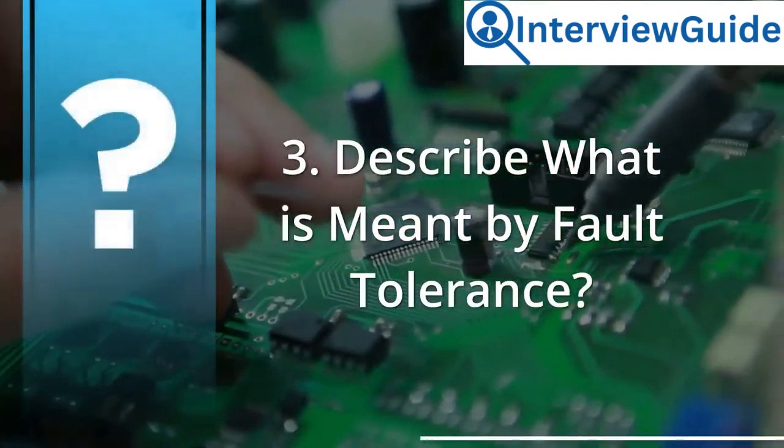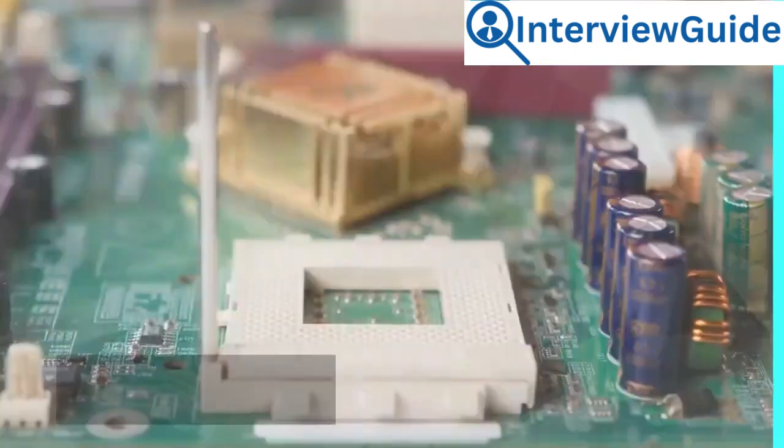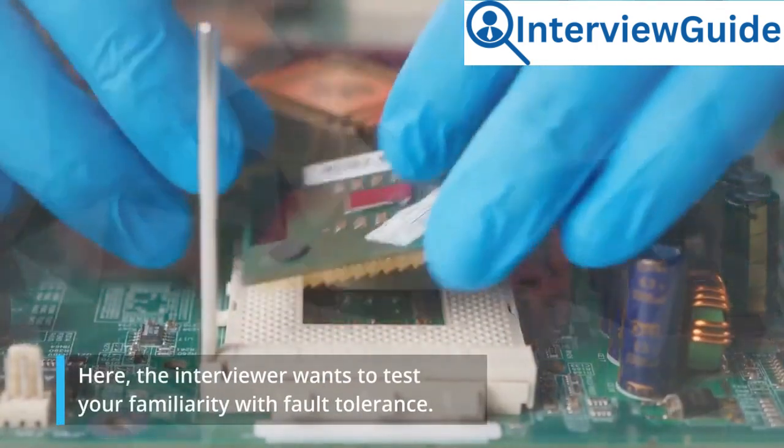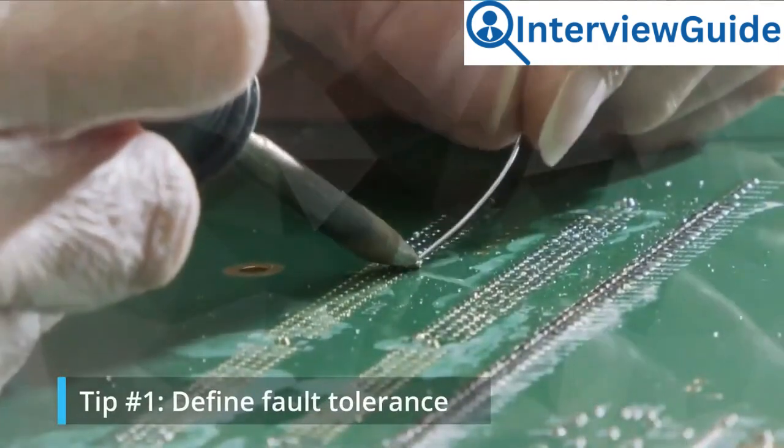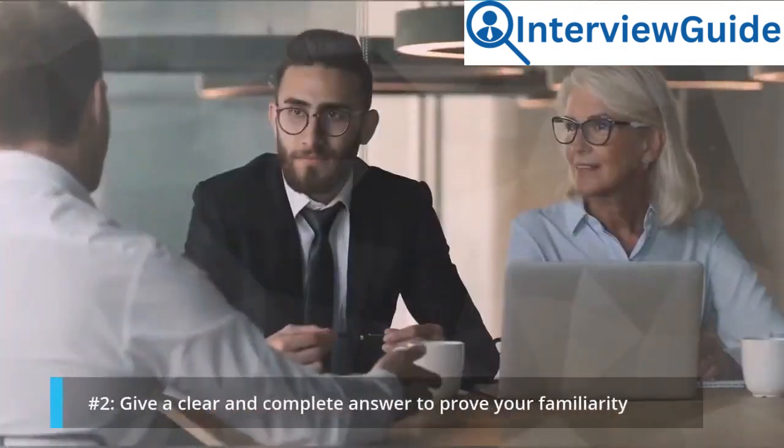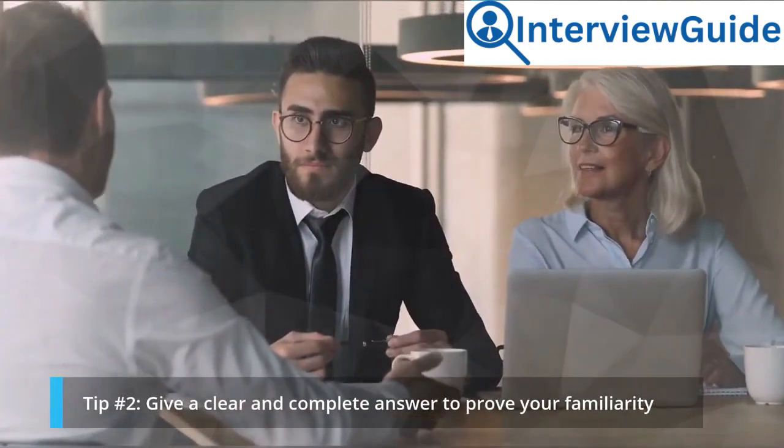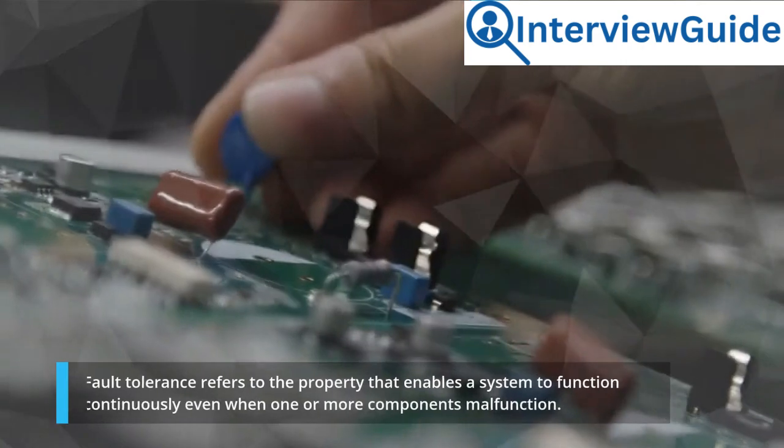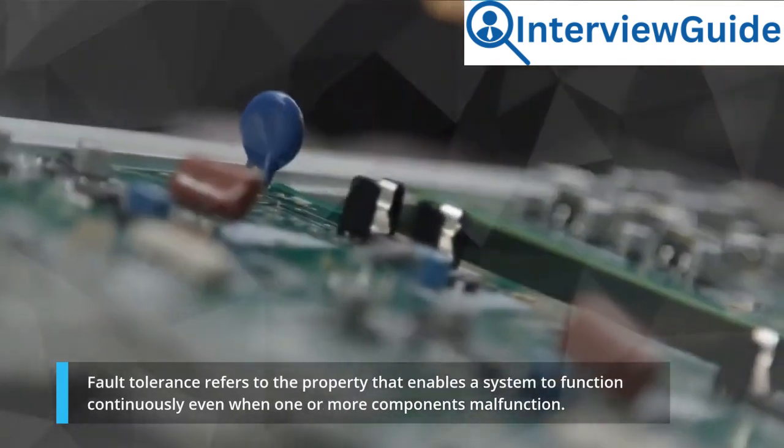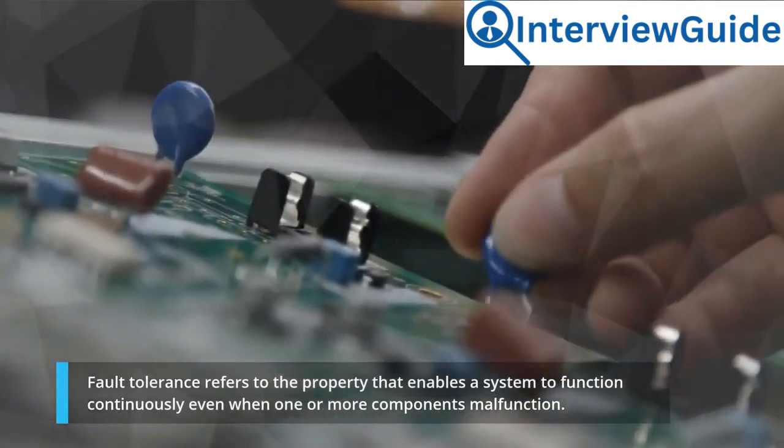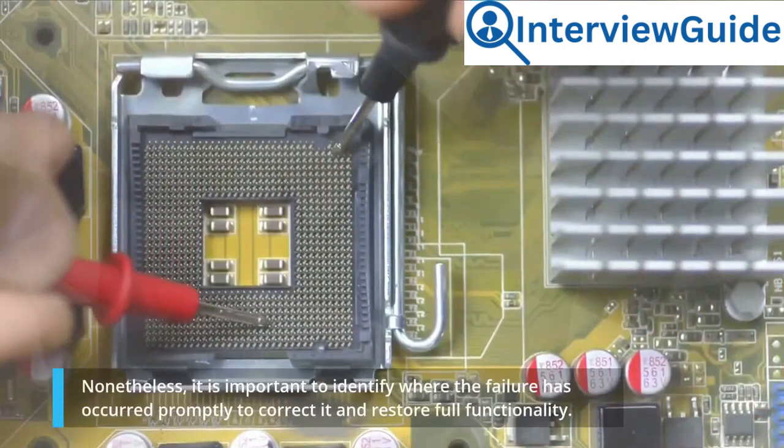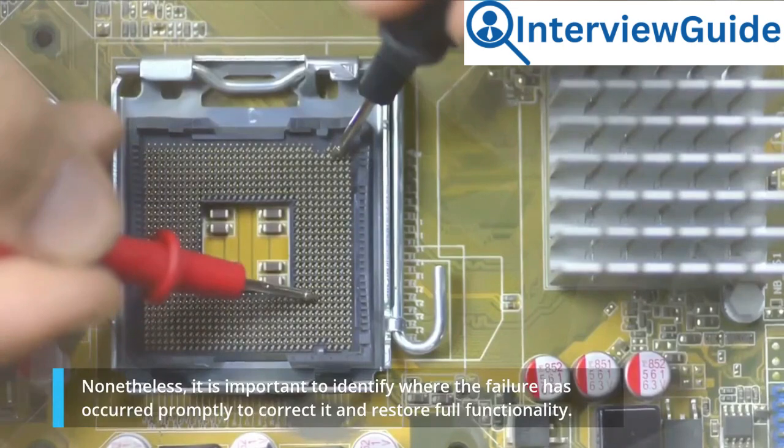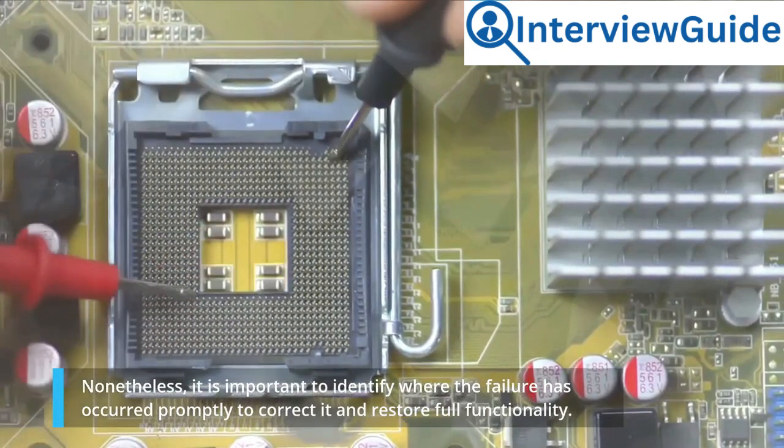Question 3: Describe what is meant by fault tolerance? Here, the interviewer wants to test your familiarity with fault tolerance. Tip number 1: define fault tolerance. Tip number 2: give a clear and complete answer to prove your familiarity. Sample answer: Fault tolerance refers to the property that enables a system to function continuously even when one or more components malfunction. Nonetheless, it is important to identify where the failure has occurred promptly to correct it and restore full functionality.